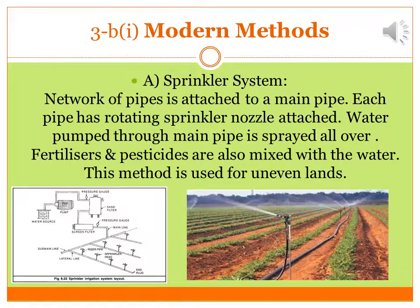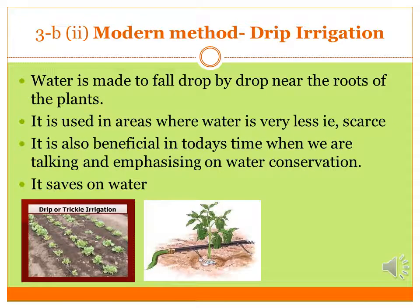When going for modern methods, the sprinkler system is one of them. It has a network of pipes attached to a main pipe which holds the water. Sometimes farmers add fertilizers as well as pesticides into it. The attached network of pipes have sprinkler nozzles on the top, and once the water enters, the nozzle rotates and sprays water evenly across the entire field.